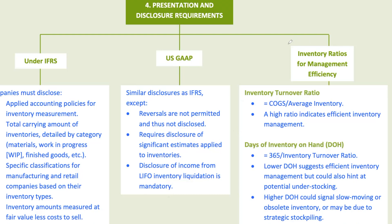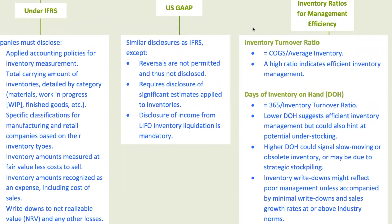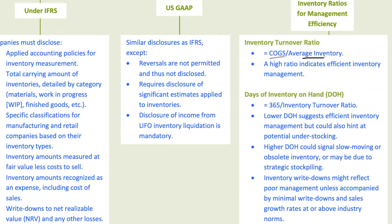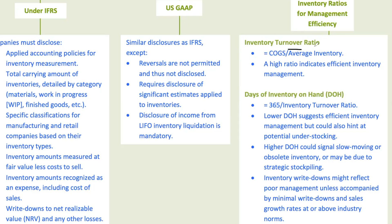Let's talk about inventory ratios — these are the tools you'll use to assess how efficiently a company is managing its inventory. The inventory turnover ratio is calculated as COGS divided by average inventory. A high turnover ratio usually indicates efficient management, but you need to be careful — it could also suggest that the company is understocking, which might lead to lost sales. Days of inventory on hand, DOH, is the flip side of turnover: it tells you how many days, on average, inventory stays on hand before being sold. A lower DOH suggests efficient management, but it could also indicate risk of stockouts.